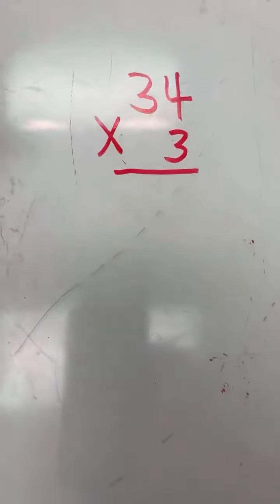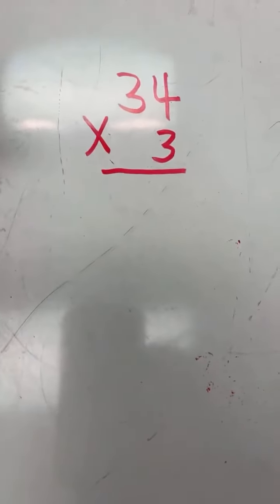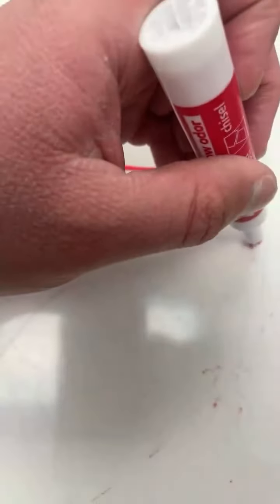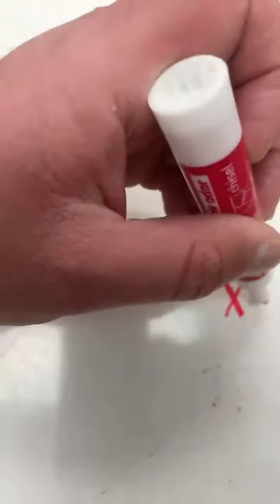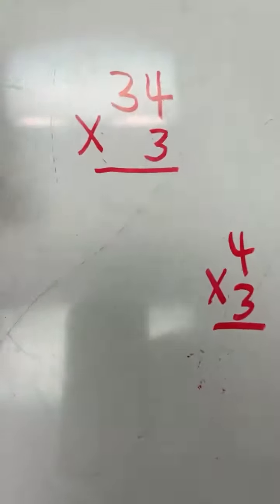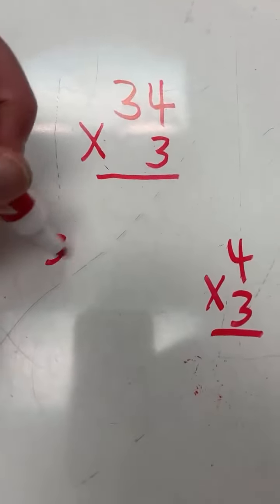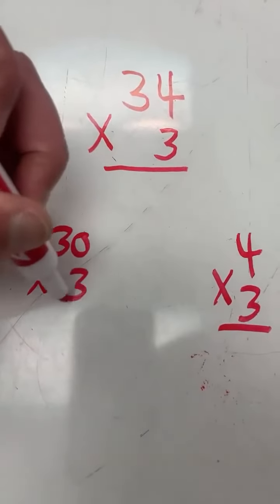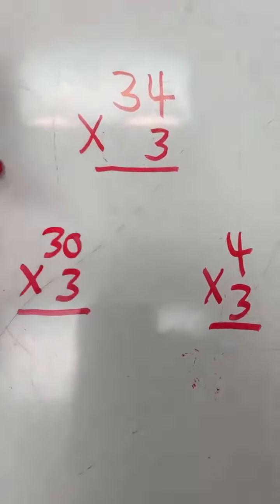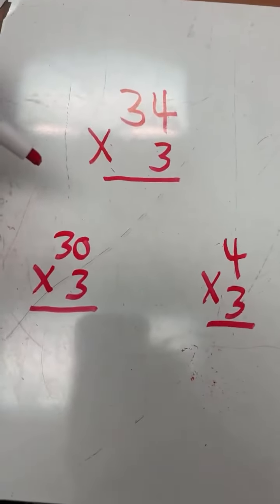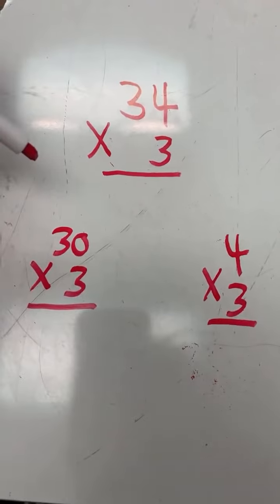To get the answer to 34 times 3, we multiply 4 times 3, we multiply 30 times 3, and then we add our two answers together to get our final answer.